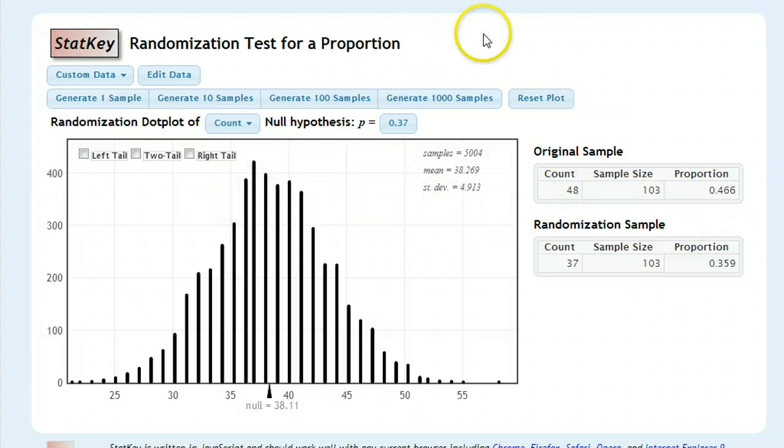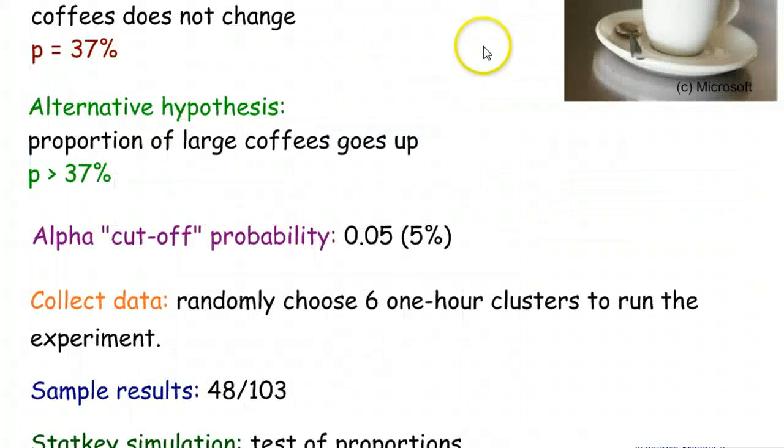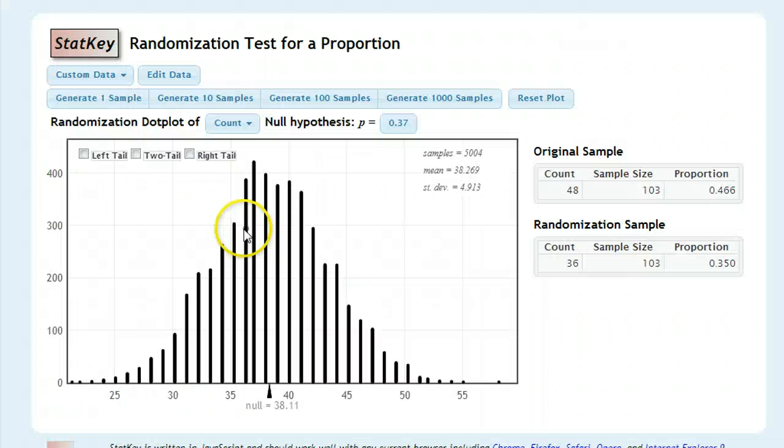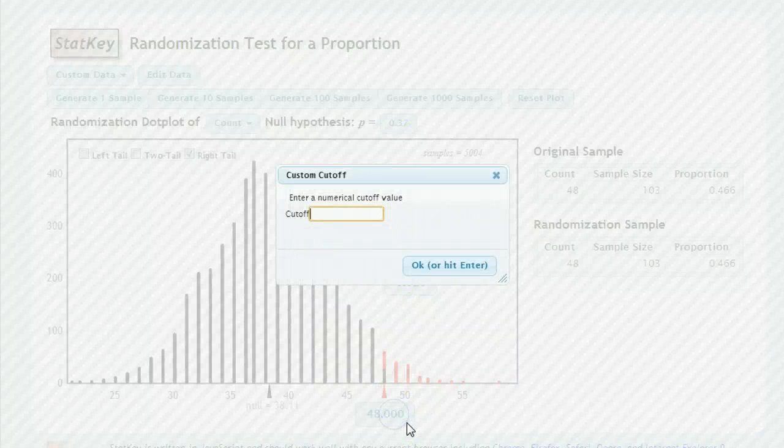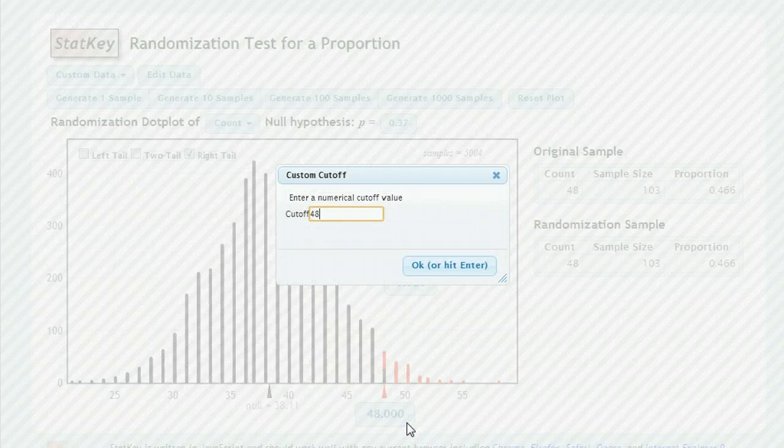I had an alternative hypothesis that said I think it is larger than 37%. So what we're going to do is we're going to go and figure out what is possibly larger than our original sample data. So I click the right tail, right tail being the larger end. And I'm going to change this value here of 48 to, ironically, 48.